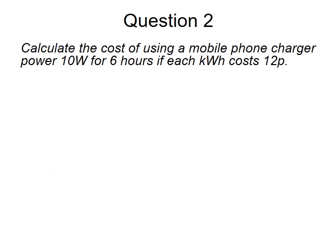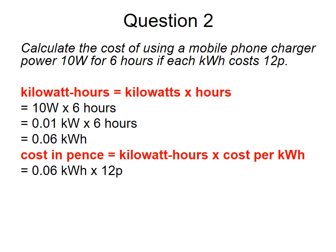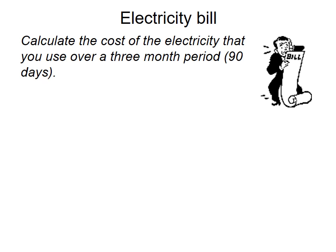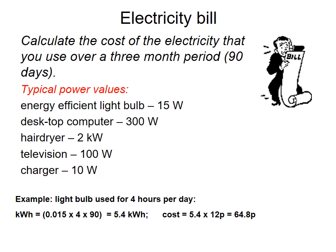Question 2: Calculate the cost of using a mobile phone charger of 10 watts for 6 hours at 12p per kilowatt-hour. Convert: 10 watts over 6 hours equals 0.06 kilowatt-hours. Cost equals 0.06 times 12 equals 0.72p. Finally, there is a task to calculate the cost of electricity used over a three-month period of 90 days using typical power values for various appliances — to be completed for prep.